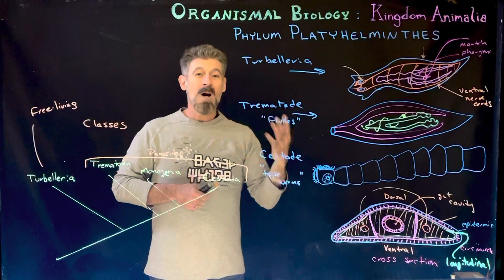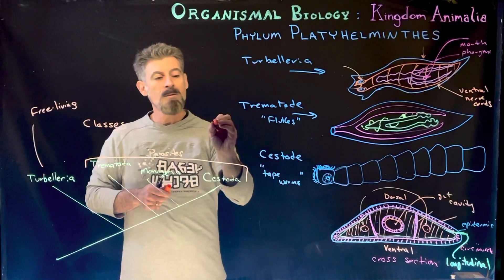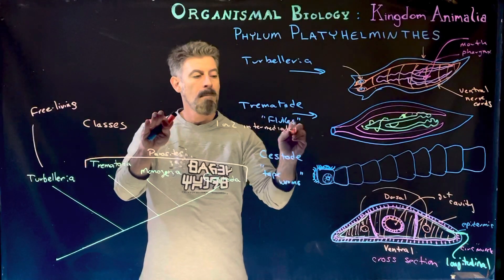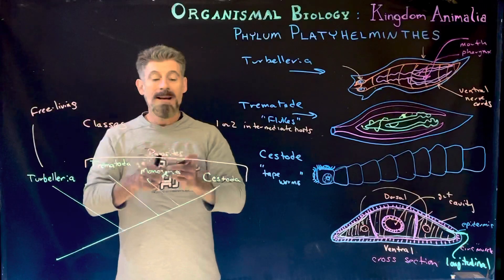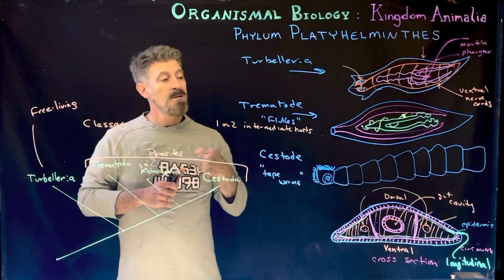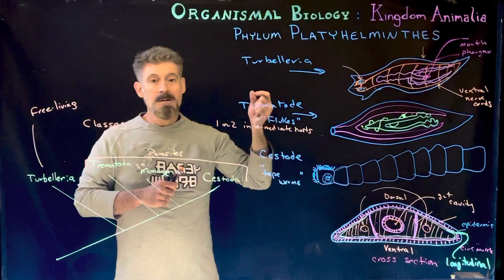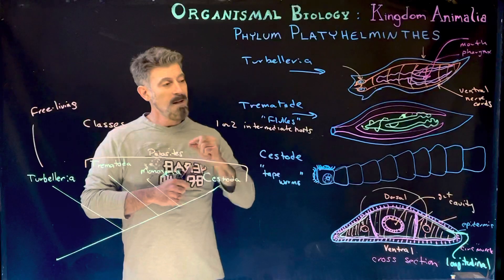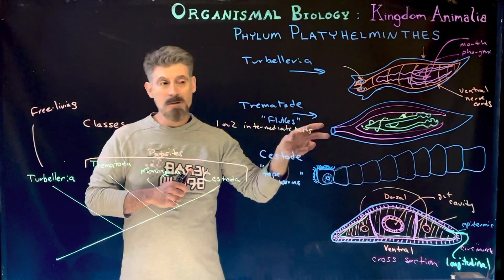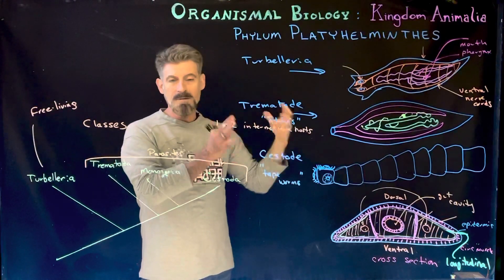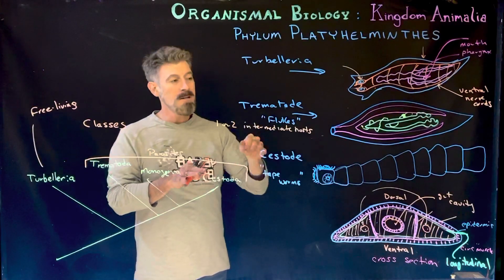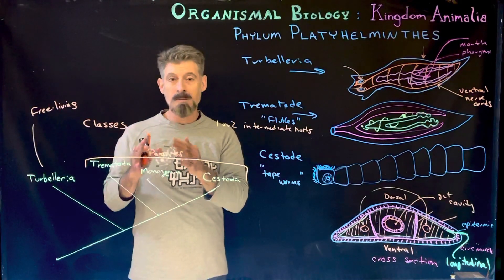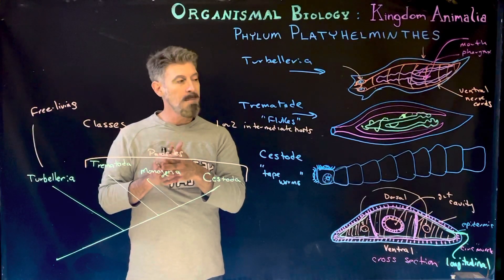The Trematodes — the flukes — are all parasites and often have complex life cycles requiring at least one or two intermediate hosts. Often they'll require an invertebrate host and then a vertebrate host. For example, the larval form might be ingested by a snail, and then a vertebrate has to eat the snail to continue development. If exposed to larvae, the adult worm cannot develop in you because it requires very specific organisms to undergo each stage of change.